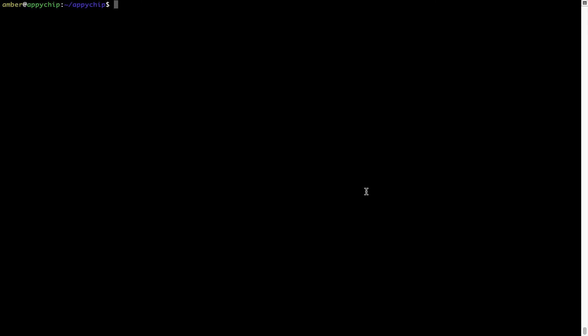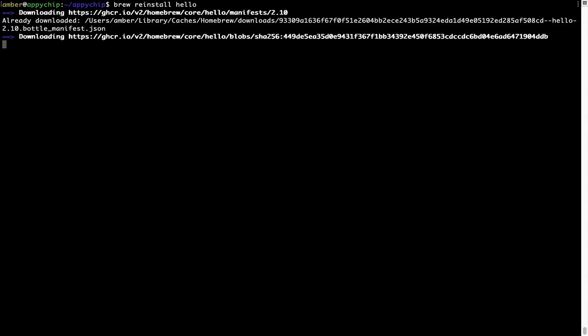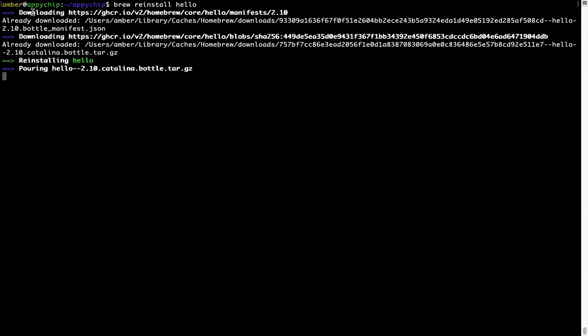If in future, any app installed using brew stops working, then you can simply reinstall it using the command brew space reinstall space the name of the program. For example, I will try to reinstall this program called hello, which is already installed on my system. As you can see, it is downloading the program and it says reinstalling hello and now hello is successfully installed.